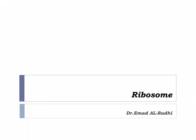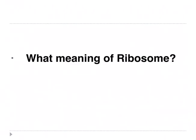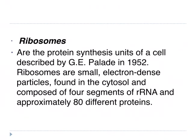Bismillah ar-Rahman ar-Rahim. This lecture is titled Ribosomes. What is the meaning of ribosome? Ribosomes are the protein synthesis units of a cell, described by George Palade in 1952. Ribosomes are small electron-dense particles found in the cytosol and composed of four segments of ribosomal RNA and approximately 80 different proteins.